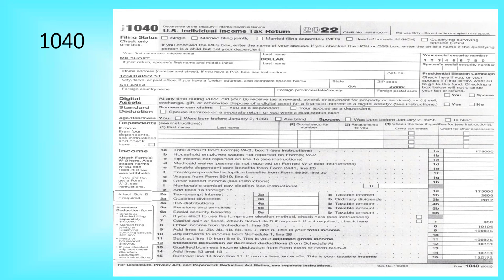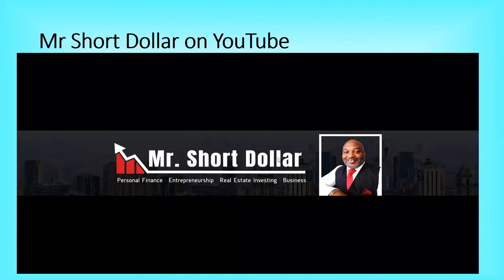And your taxable income is the amount of income that you are liable for towards any taxes, minus any kind of credits that you may have applicable towards that. So I just want to give you guys that introduction and explanation of a Schedule E and how that information is used.